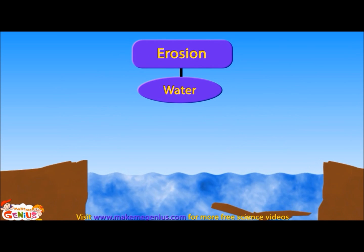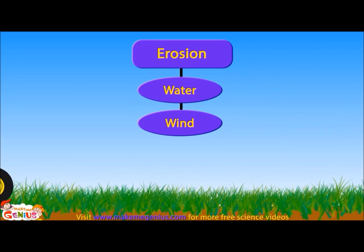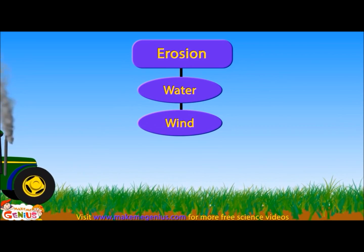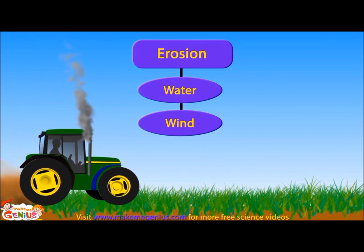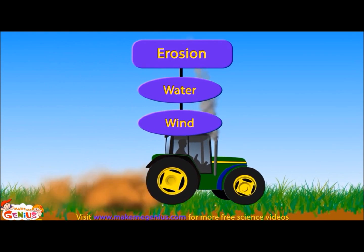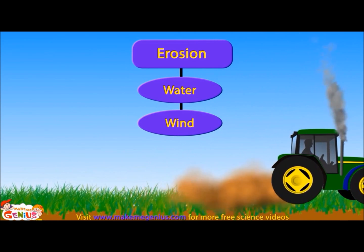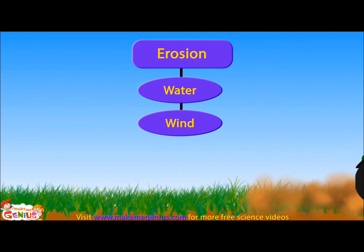Erosion happens in many ways. It keeps happening together along with weathering. Like the soil on the riverside, which is first broken by the pressure of the water, and then falls down into the river where water carries it to different places. Wind also plays a major role in carrying away broken particles. See here — a farmer is plowing his field. This plowing causes many broken soil particles, which are then carried away by the strong wind.